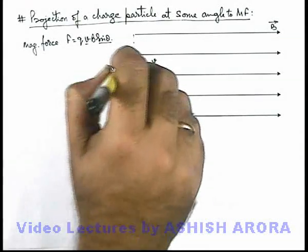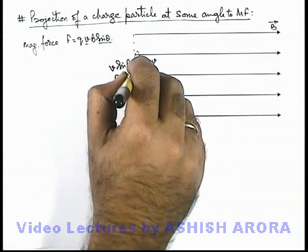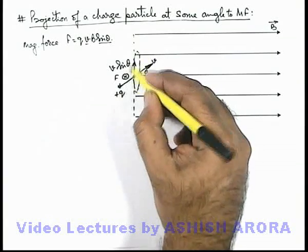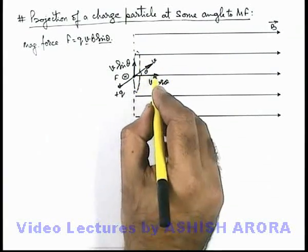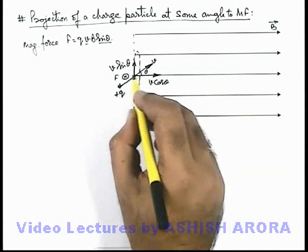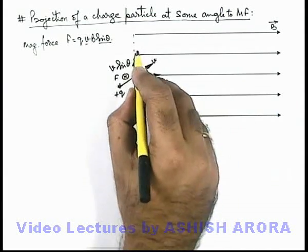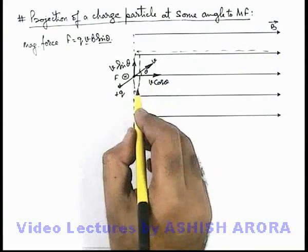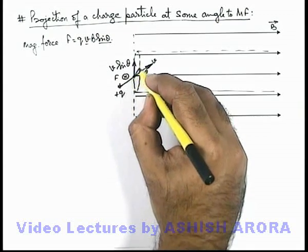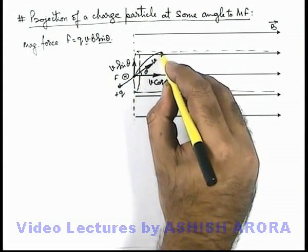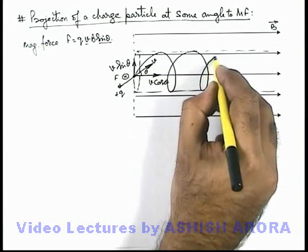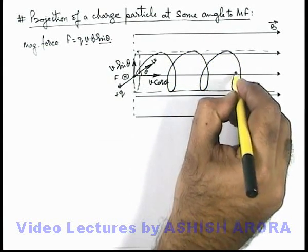Due to v sin theta, the charge will have a tendency to circulate, with its center lying along an axis passing through this point perpendicular to the surface. Meanwhile, v cos theta will have a tendency to pull it in the forward direction. So the resulting motion of this charged particle will be bounded in a cylindrical zone — circulating due to v sin theta and continuously moving forward due to v cos theta.